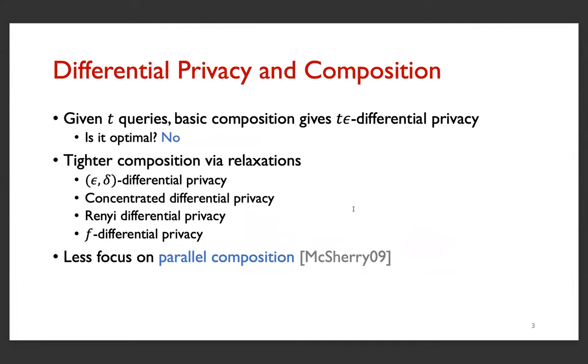Under basic composition of differential privacy, answering T queries consumes T epsilon budget. This is not optimal and there have been various relaxations of differential privacy in order to find a tighter composition. Most of these works are on sequential composition and less focus has been given to another form of composition called parallel composition.